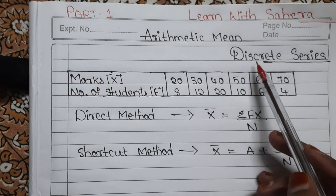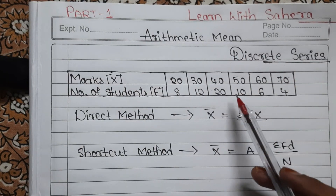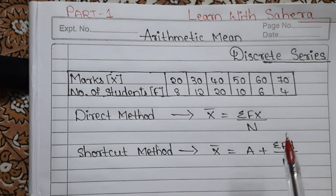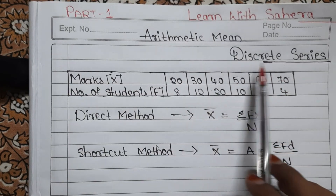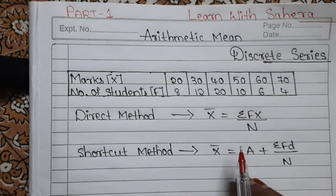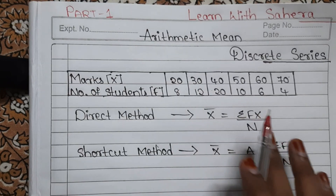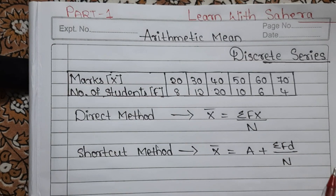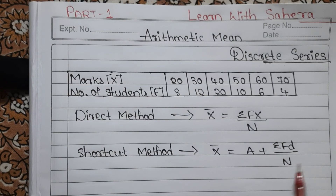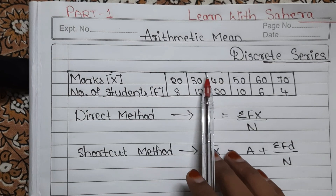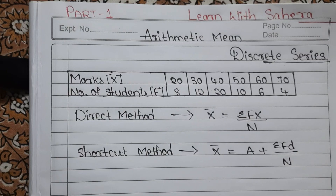Sometimes in the examination they may ask you arithmetic mean in discrete series, sometimes in continuous series. So if you are perfect with both series, you will easily be able to do the solution and score full marks. This is a really very important video, especially for degree second semester BBA students. From unit two you will definitely be getting this question.